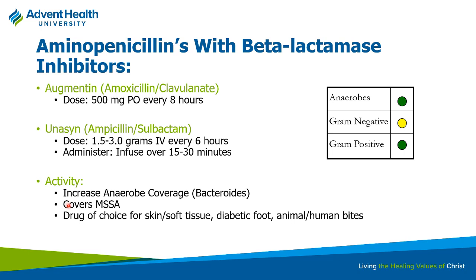A student asks about why you'd want to inhibit beta-lactamase if it cleaves the bond. The answer is: the bacteria produce beta-lactamase to disrupt the beta-lactam ring — once disrupted, the antibiotic can't bind to the penicillin-binding protein anymore. This is the bacteria's defense mechanism. By having a drug that inhibits the beta-lactamase, you allow your antibiotic to work again. Also, due to resistance from things like modified penicillin-binding proteins, there's really no penicillin that will cover MRSA.